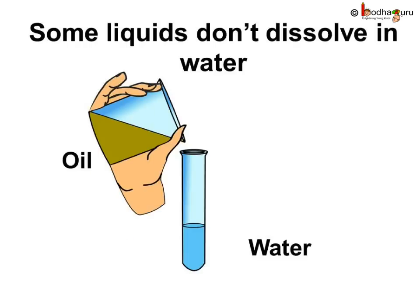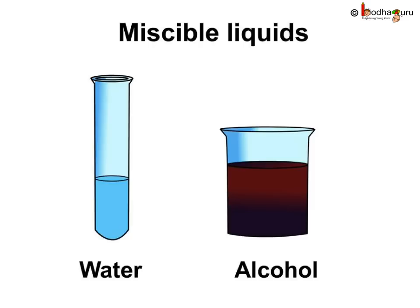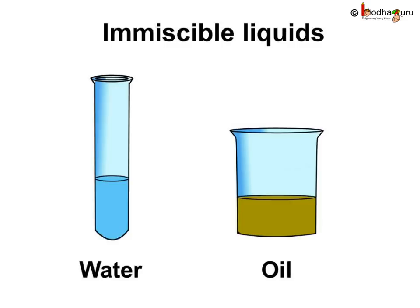But try pouring a spoonful of oil in the water and mix it. What happens? The oil floats on the surface of the water — it does not dissolve in the water. Liquids like water and alcohol that dissolve in each other are called miscible liquids. Liquids that do not dissolve in each other are called immiscible liquids. So water and oil are immiscible liquids.